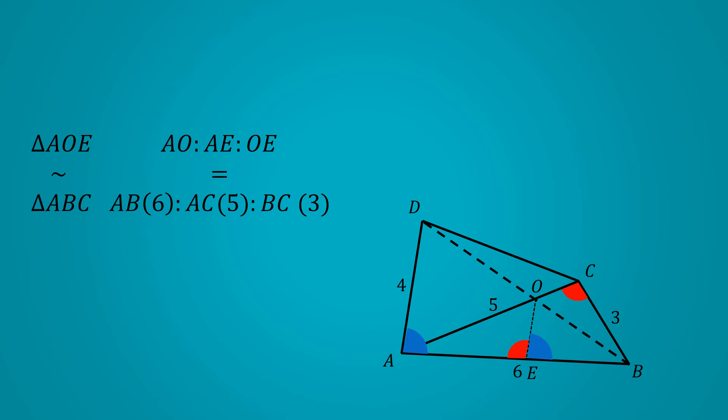However, we realize that we know none of the side lengths in triangle AOE, and calling those three lengths 6X, 5X, and 3X doesn't seem to yield too much. So, once again, it seems we are stuck. Never mind, let's start over again.